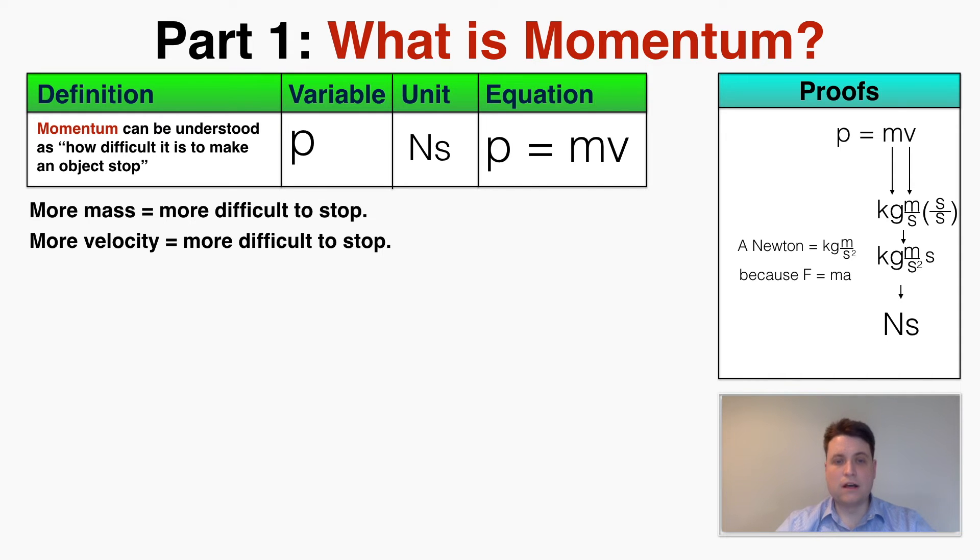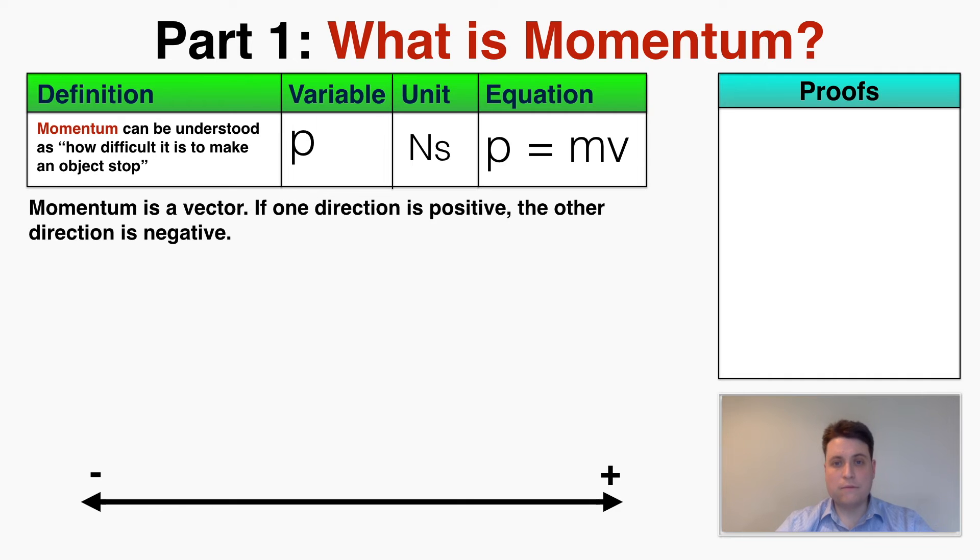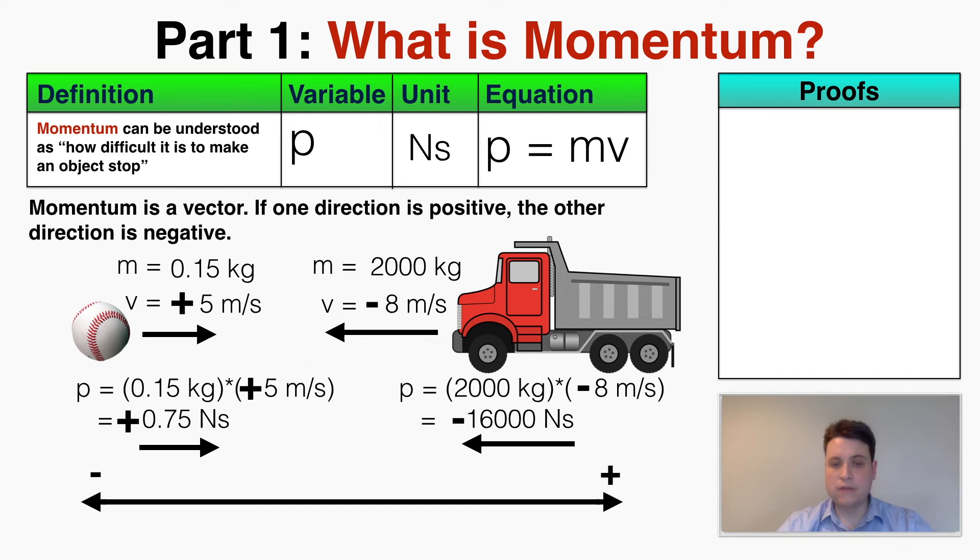Because momentum has velocity it's a vector, and if one direction is positive the other direction is negative, and it's entirely arbitrary which direction I define as positive and negative, just like with all other vectors. I can imagine, for example, that I have a rightward moving baseball and a leftward moving truck, and if I'm calling right positive and left negative I would apply the positive to the baseball and the negative to the truck's velocity. When I multiply out the mass and the velocity I find that the momentum for the baseball is also positive and the momentum for the truck is also negative.